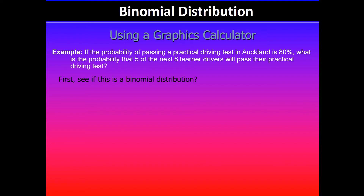First, we need to check if this is a binomial distribution. We are looking at learner drivers — these are people we can count, so it's discrete data. We'll check the four conditions. We're given a fixed number of trials: the next eight learner drivers, so the fixed number of trials is eight.